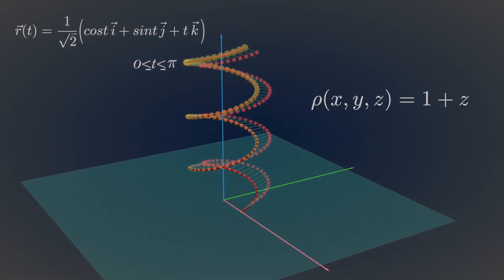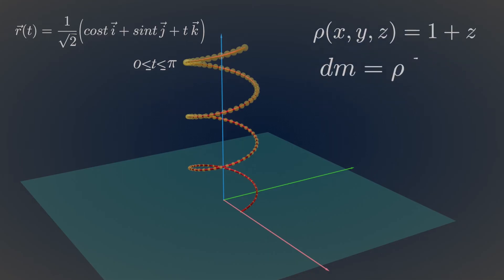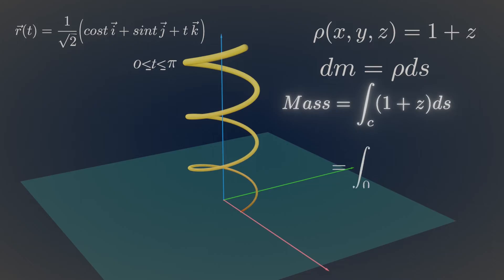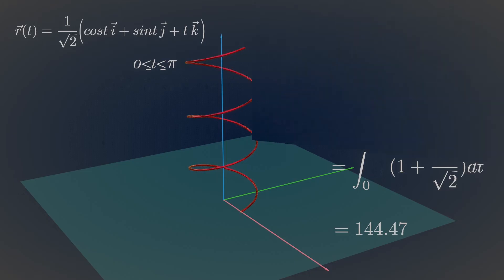If this density function is mass per unit length, then the mass can be calculated by using this formula. That's some geometrical meaning of a line integral of scalar functions.